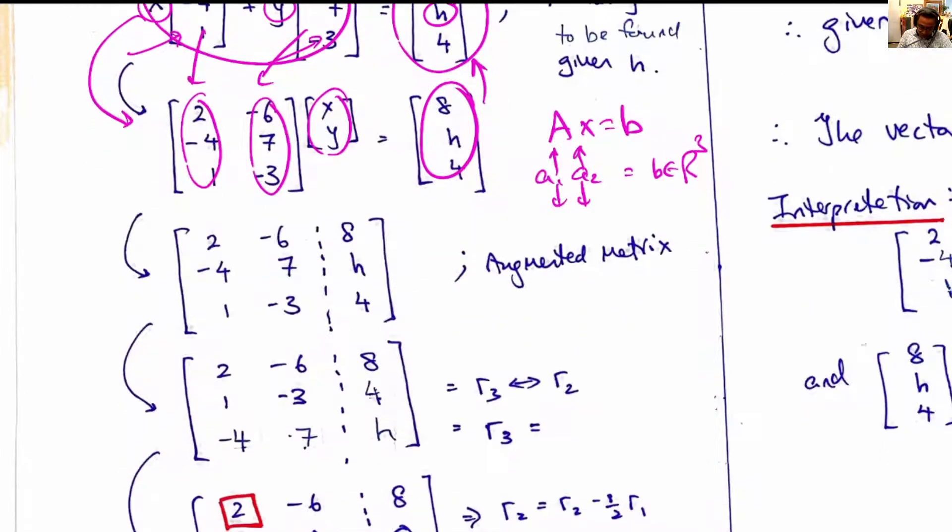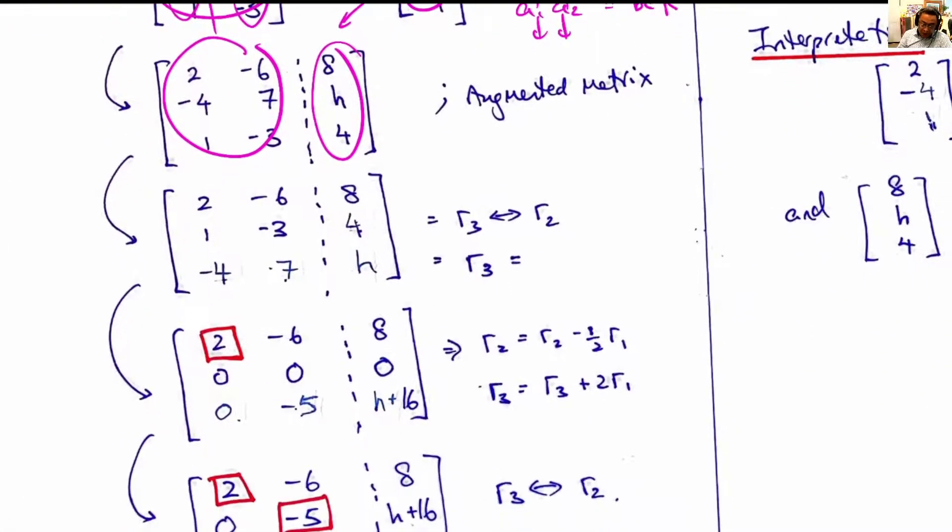We proceed with the augmented matrix. We put A here, b here, and we perform Gaussian elimination.